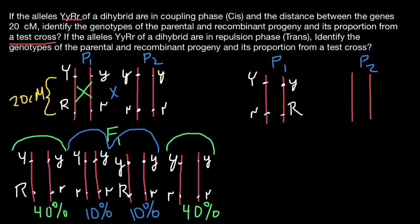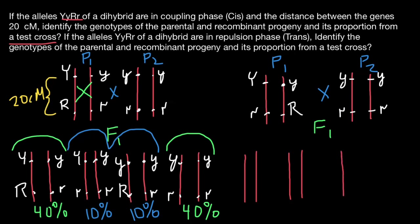As you can see, these two chromosomes are not the same as in the cis arrangement. Because we are performing the same test cross, parent two genotype is again small y, small r / small y, small r — homozygous recessive for each locus. In the F1 progeny we are going to get four genotypic variants, but they will be different from what we saw in the cis case.